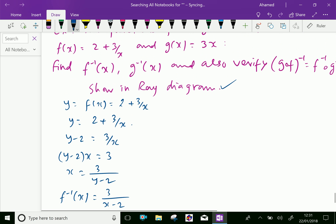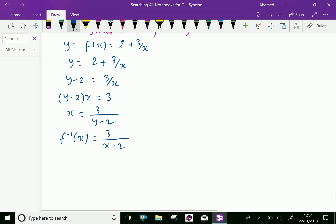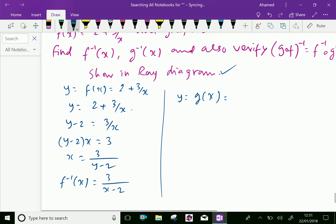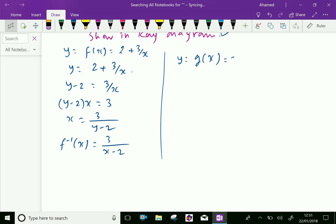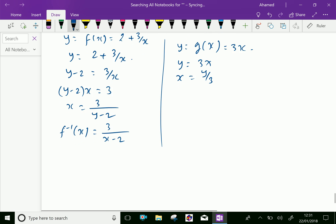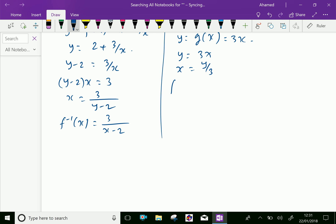Next one, g inverse x. Let y equal g of x, which is equal 3x. Now, y equal 3x. Then x equal y over 3. Then substitute x as g inverse x, which equals x over 3.